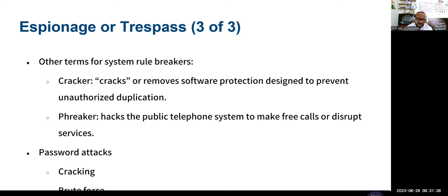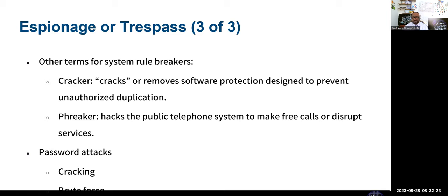A cracker is an expert hacker. A phreaker uses the public telephone system to make free calls or disrupt services. For password attacks, there are three types you should be aware of: brute force — keep trying until you get through; dictionary attack — using common dictionary words from a word list; and rainbow table — which is based on hashes. Passwords are not stored in plain text today — a hash value is stored. When you log in, the system takes your password, hashes it, and stores it.